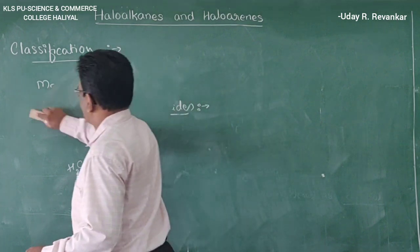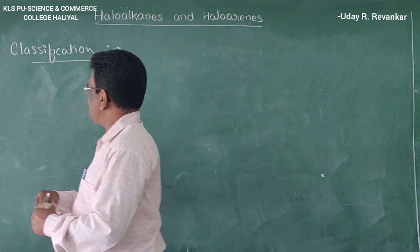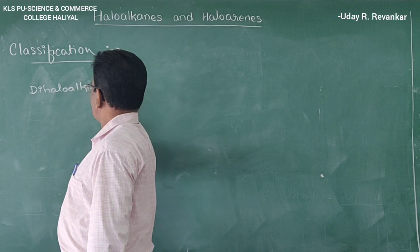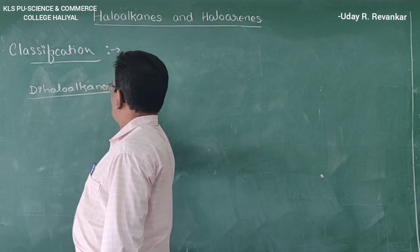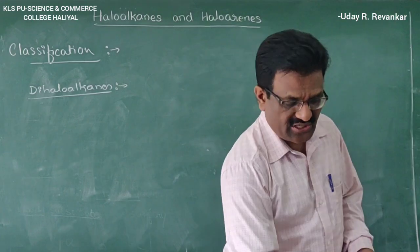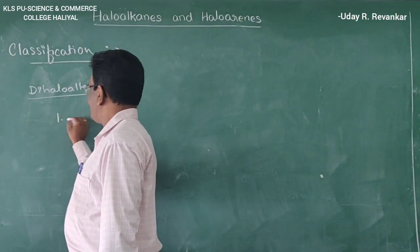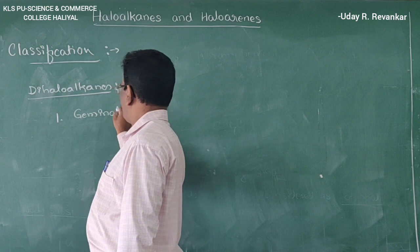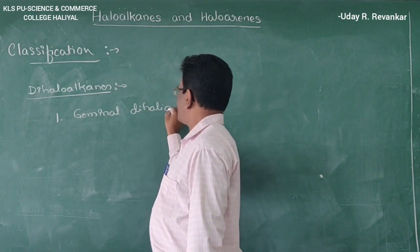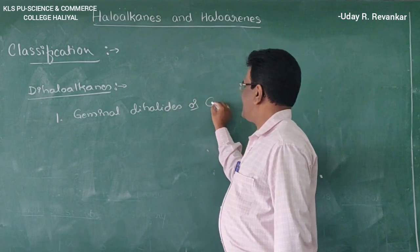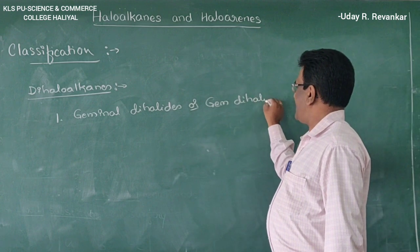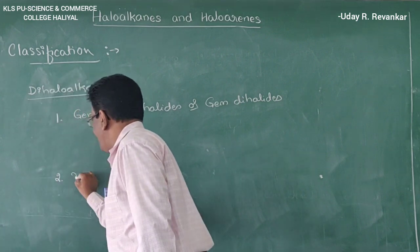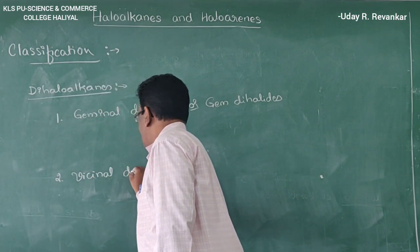Next is dihalides. In dihalides, two hydrogen atoms are replaced by halogen atoms. The first classification is gem dihalides, also called geminal dihalides. The second is vicinal dihalides.